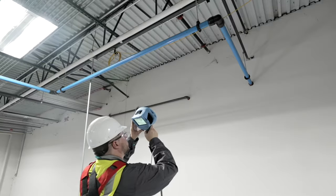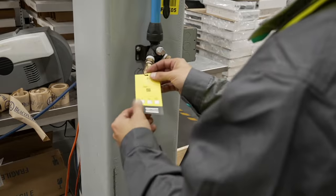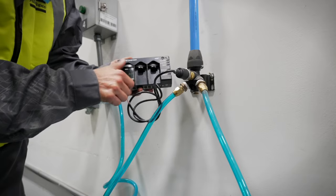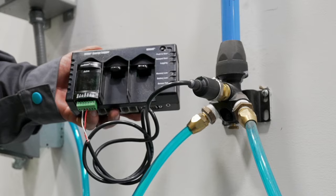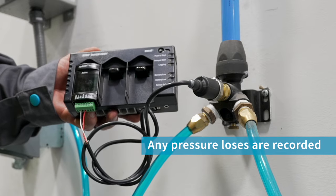We trace the pipework, thoroughly examining every square inch, clearly tagging any leaks. Additionally, we measure pressure at the point of use to record any pressure losses in the piping system.